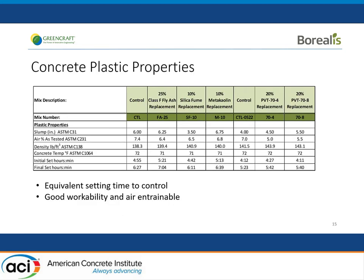When we look at the plastic properties, you can get good plastic properties in this high-performance concrete. Setting times — the last two columns are the new materials and the first column is the control. They're a little bit faster than the control, or about the same, whereas you can see fly ash mixes are doing some retardation versus the control. So not a big problem in summer, but in winter that might be a problem. So equivalent setting time and good workability.